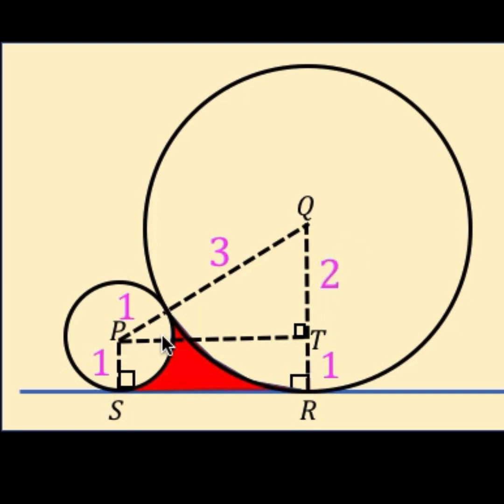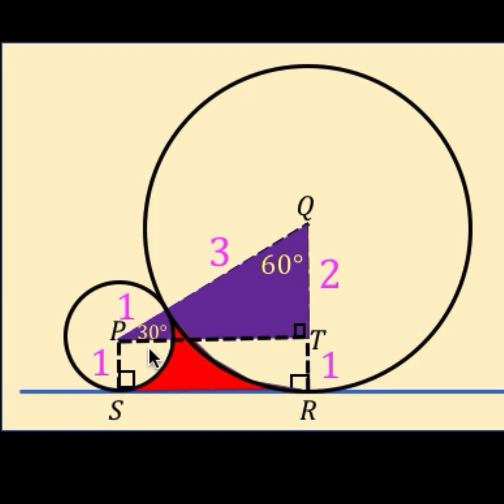So we have here a right triangle, and the hypotenuse is 3 plus 1 or 4 units and one of the legs is 2 units. When we have this right triangle where one of the sides is one half that of the hypotenuse, we know that the angle opposite these 2 units must be 30 degrees. And if it's 30 degrees, this angle here must be 60 degrees, and so we have a 30-60-90 triangle.